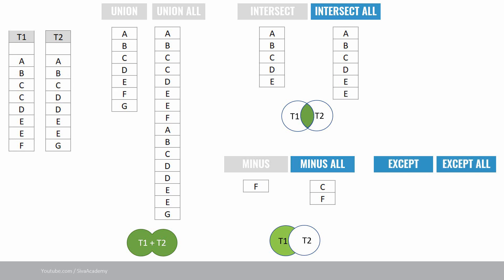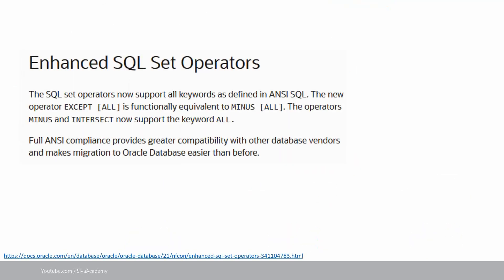The next set of keywords are except and except all. Except and except all are functionally exactly the same as minus and minus all. From the Oracle documentation, the set operators now support all keywords as defined in ANSI SQL. The new operators except and except all are functionally equivalent to minus and minus all, and minus and intersect now support the keyword all. Oracle's set operators are now fully ANSI compliant, meaning queries written in Oracle can be used as-is in any other ANSI-compliant database.